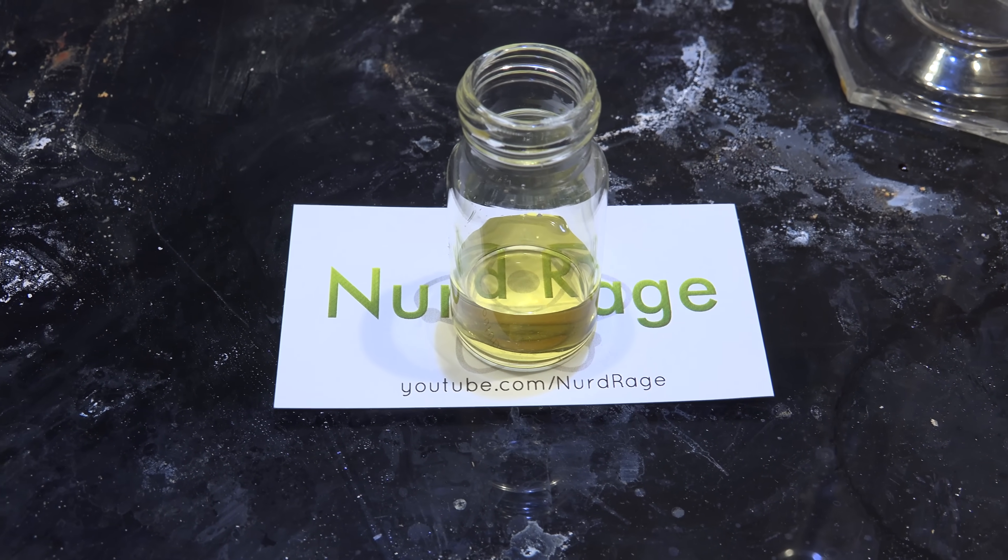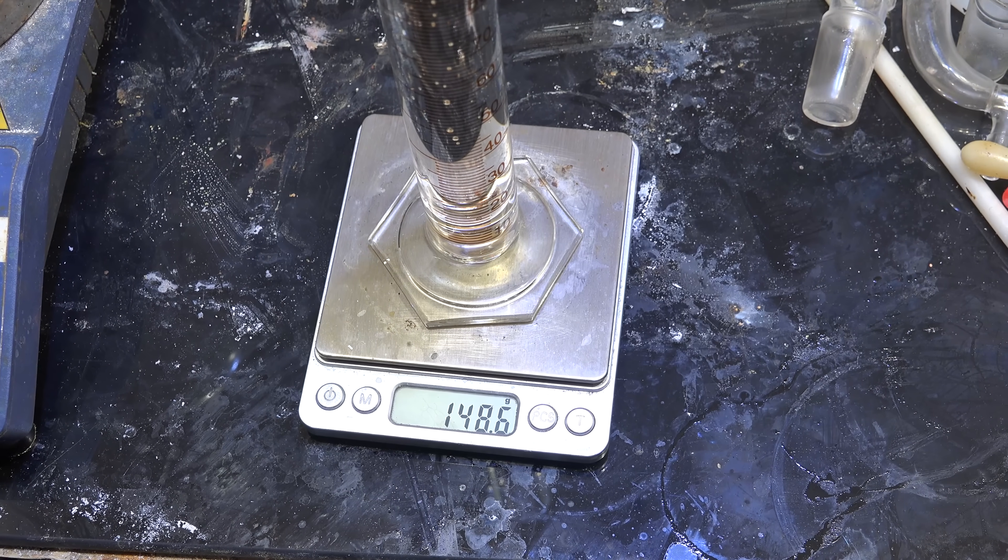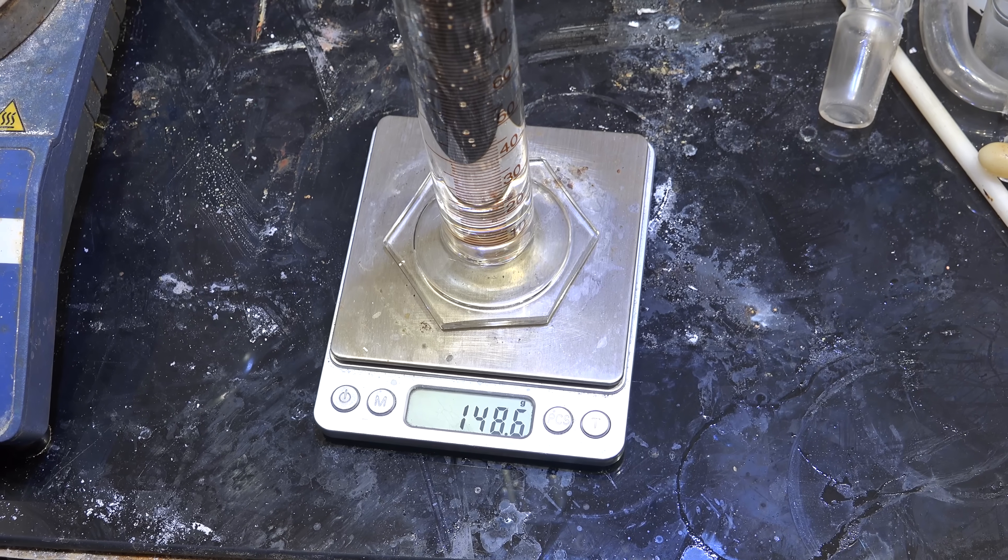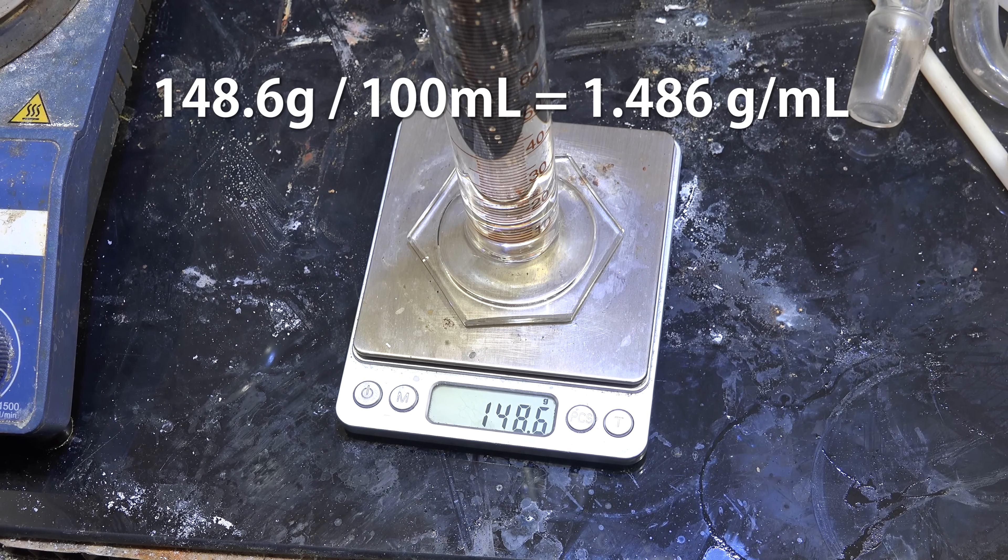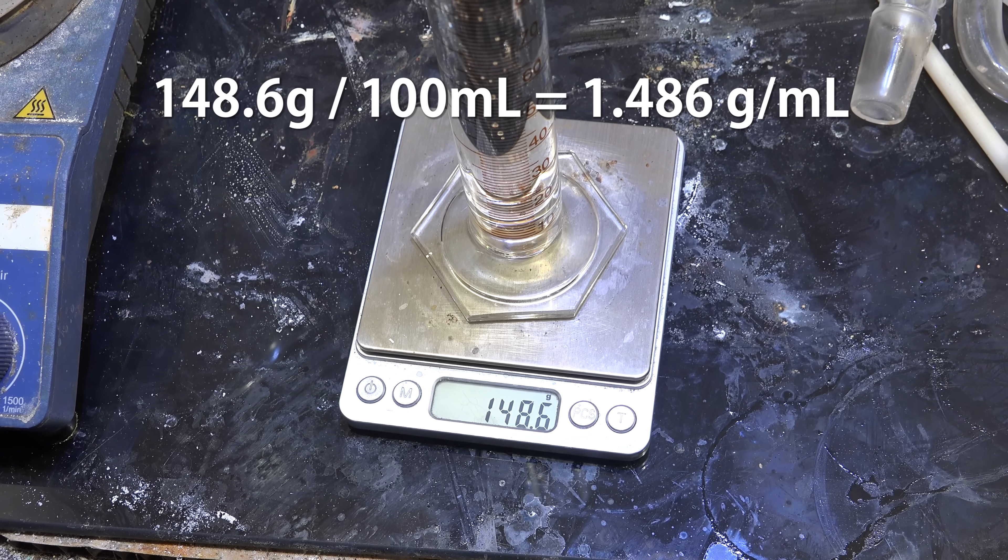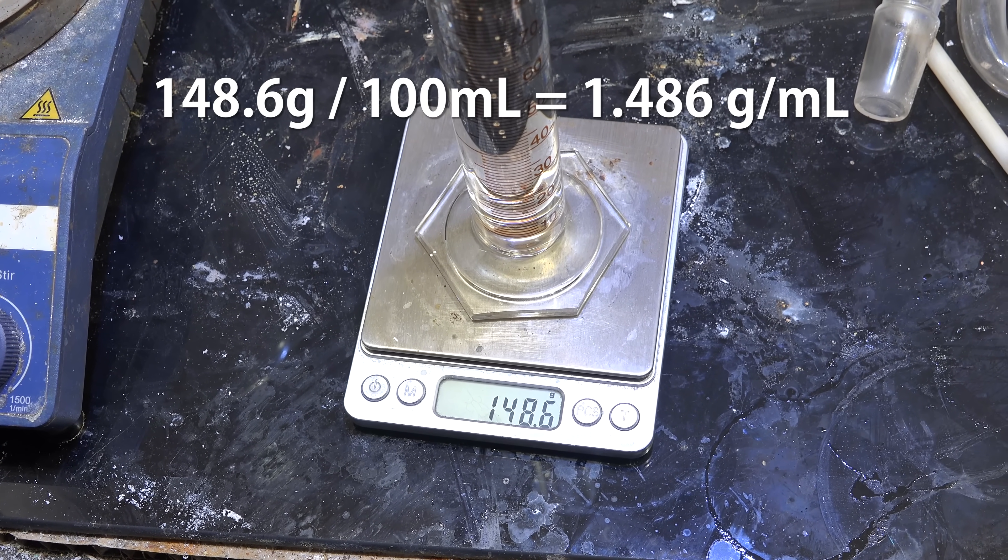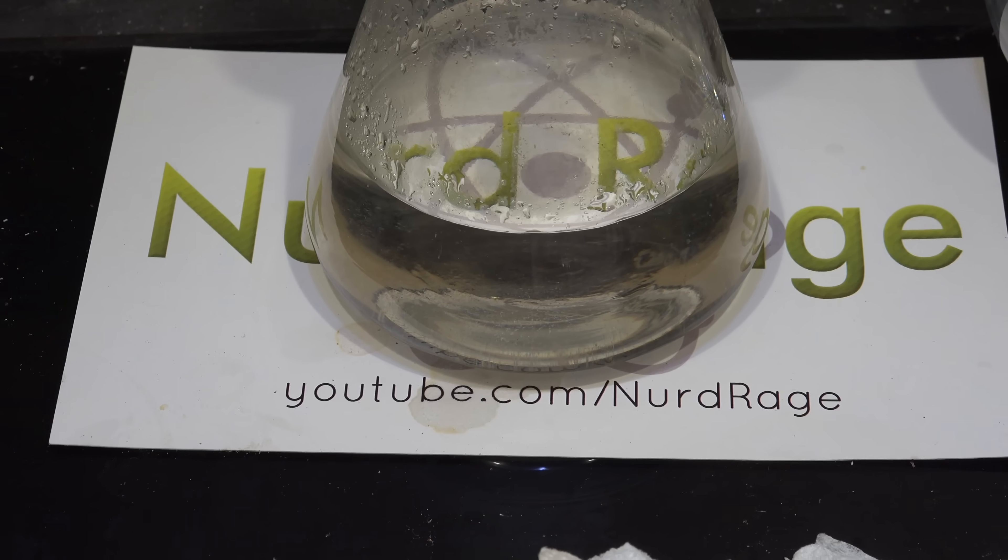The yellow or orange color is bromine being formed from the oxidation reaction. Another test for the concentration is to take a sample of known volume and divide the mass by it to find the density. Azeotropic hydrobromic acid at 47% concentration has a density of about 1.49 g per milliliter. So we're pretty close into the right range. And that is how you make hydrobromic acid.